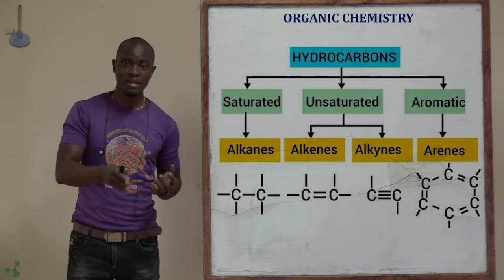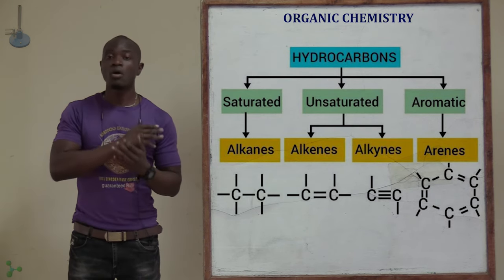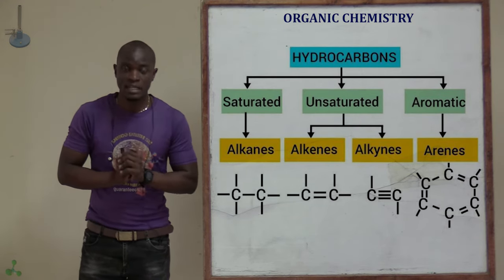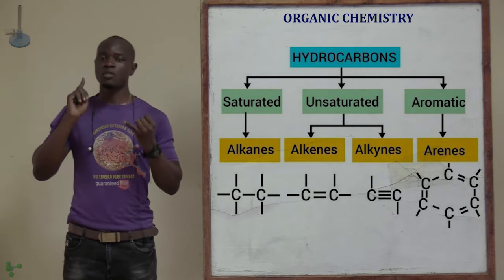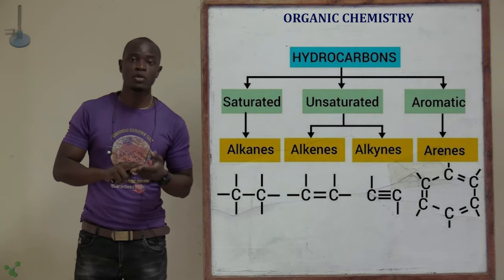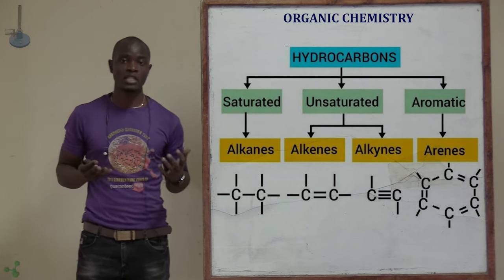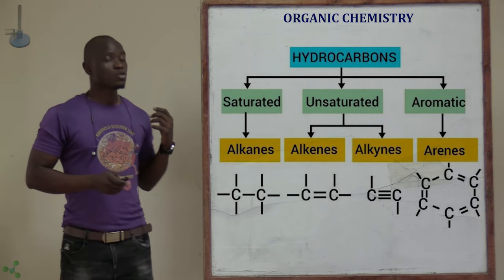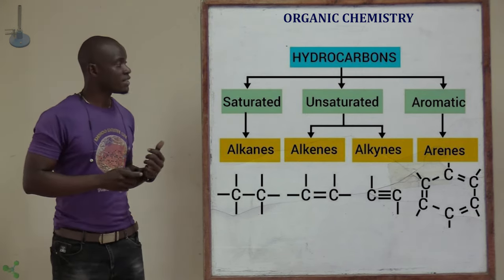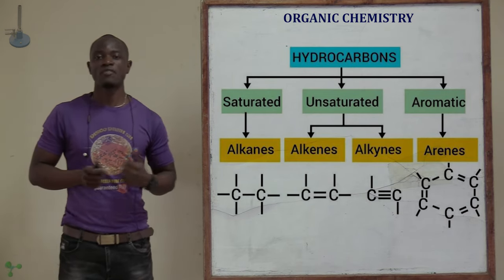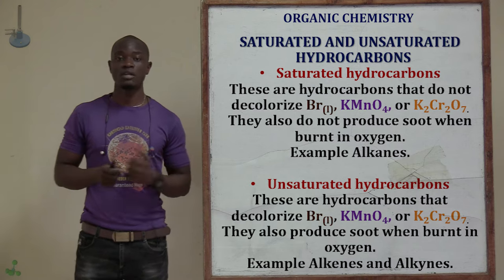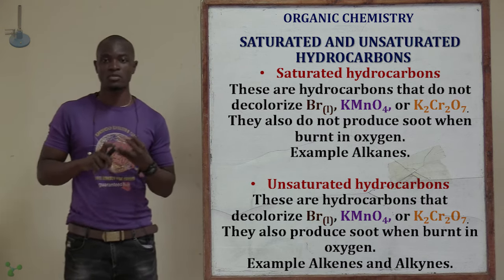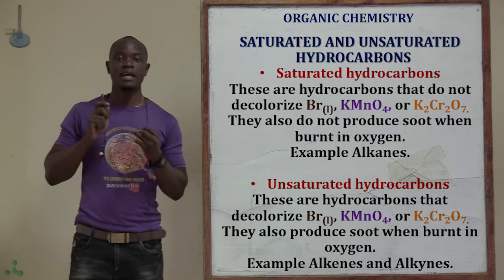Examples of saturated hydrocarbons: in the three families, we have the alkanes. All members of the alkanes are saturated hydrocarbons, meaning they do not produce soot when burnt and do not decolorize potassium permanganate, dichromate, or bromine water. The second category is the unsaturated hydrocarbons, which mainly comprise of the alkenes and the alkynes — those two families.